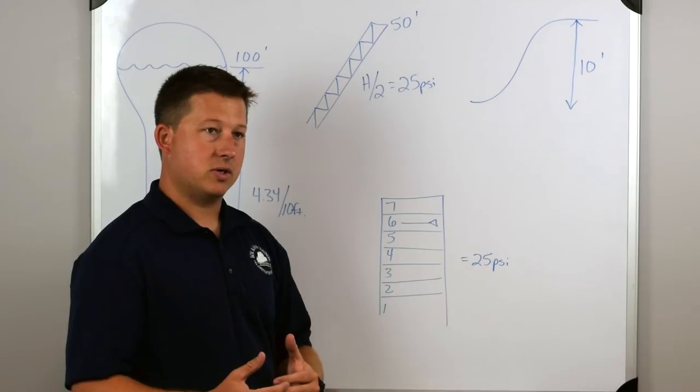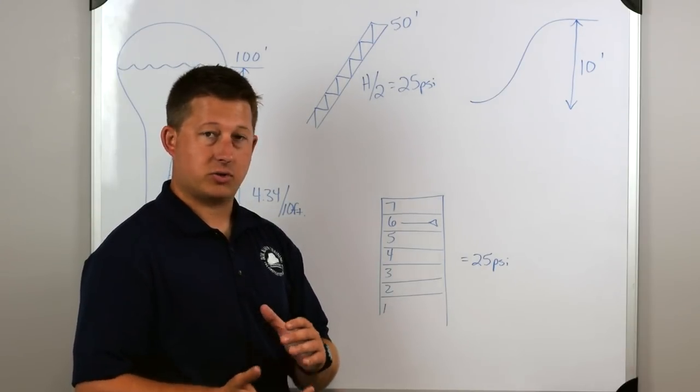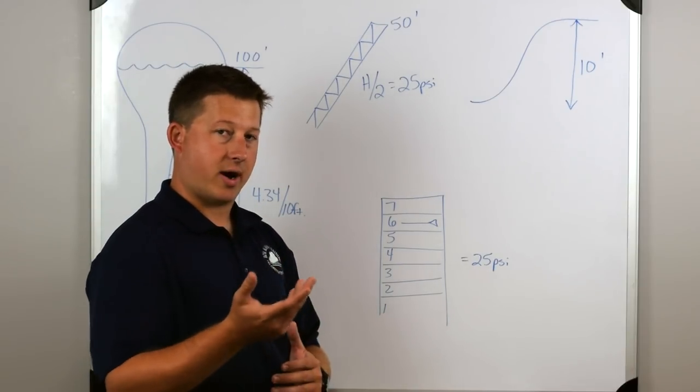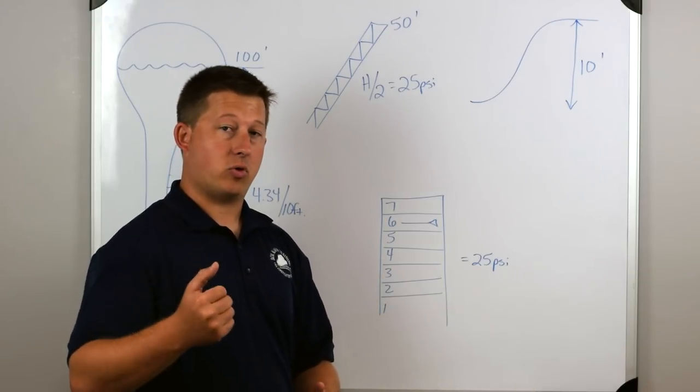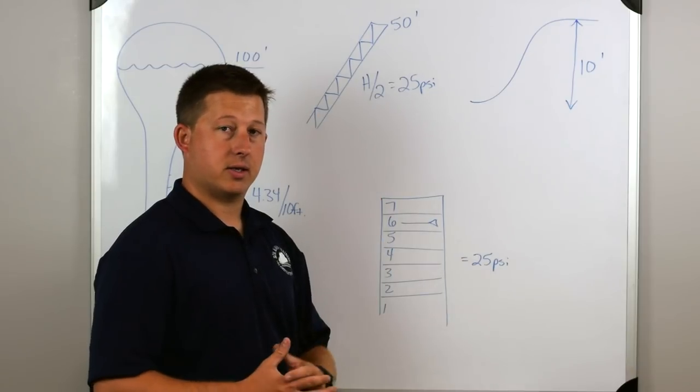So those are really the methods that we're going to use to determine our elevation gain or loss. You'll typically do this at the end. Once you determine what your pressure would be on a pump chart or on your friction loss chart, which you're using, you may look and say I need to add this much or subtract this much because I'm going uphill, downhill, I'm working on an upper floor, lower floor, or I'm trying to feed an aerial device, something like that.